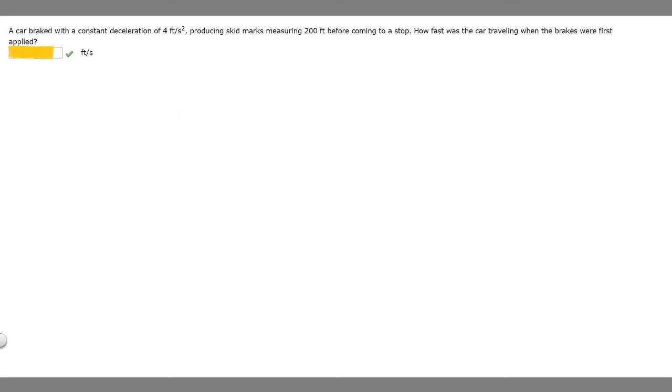In this problem we're told that a car braked with a constant deceleration of 4 feet per second squared. It produced skid marks measuring 200 feet before coming to a stop. How fast was the car traveling when the brakes were first applied?